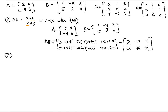The second example is to find BA. Before using the multiplication technique, first note whether BA is possible. B is 2 by 3 and A is 2 by 2. The inner numbers — 3 and 2 — are different. If they're different, the product BA is not possible. It's undefined.